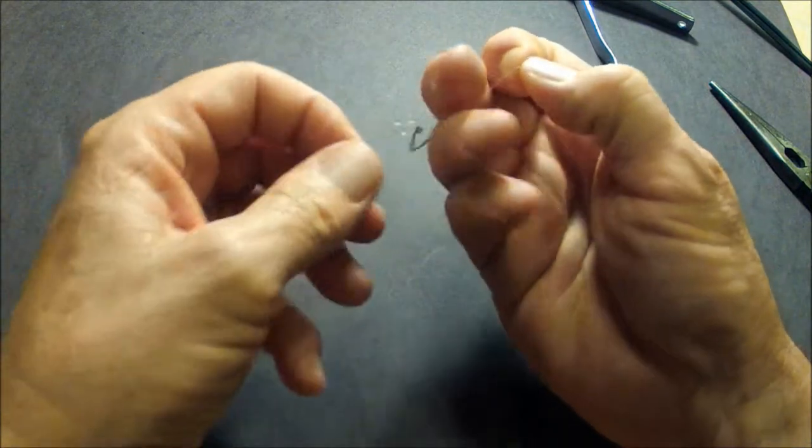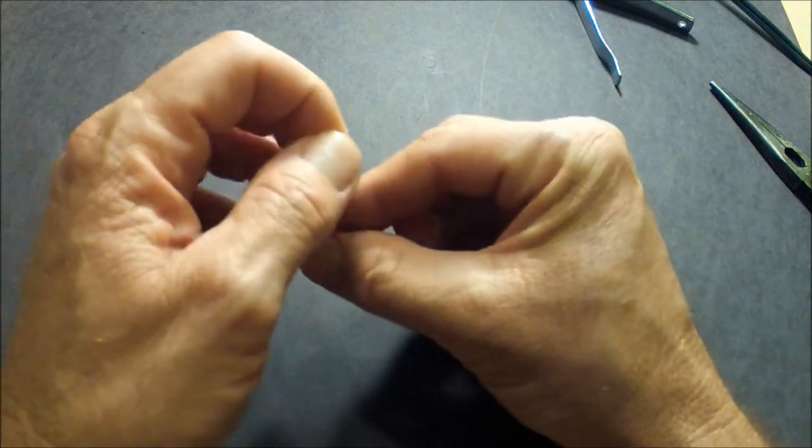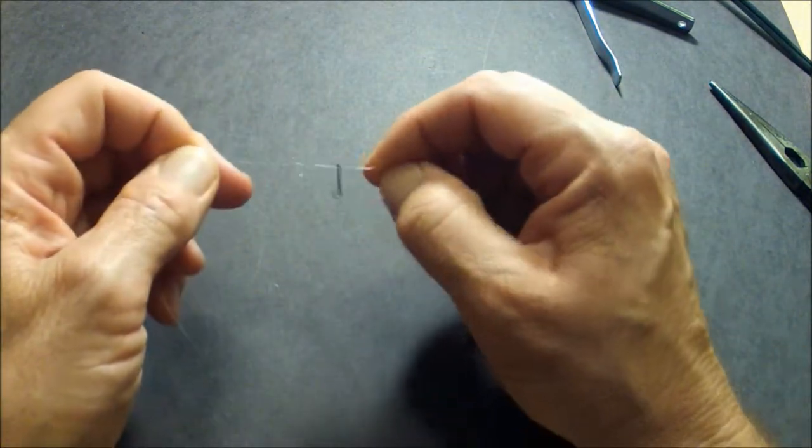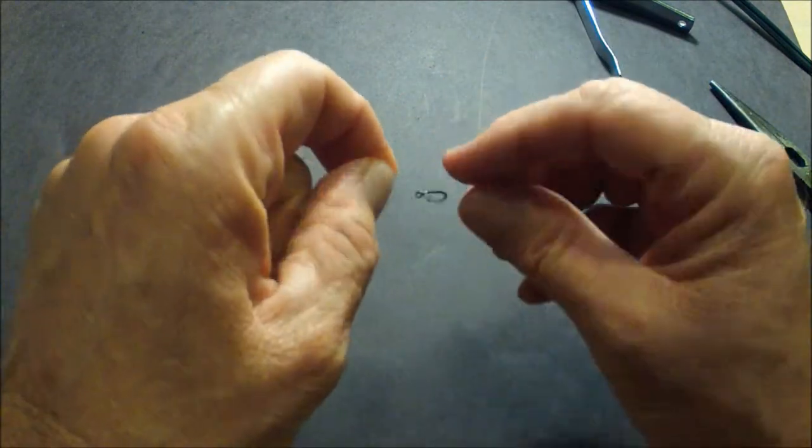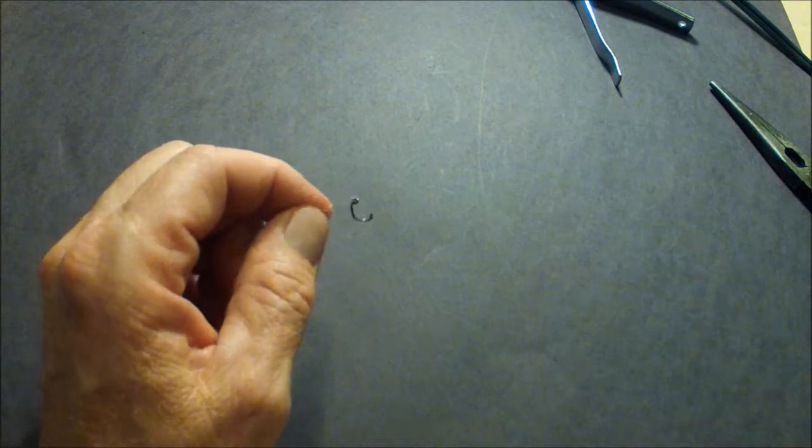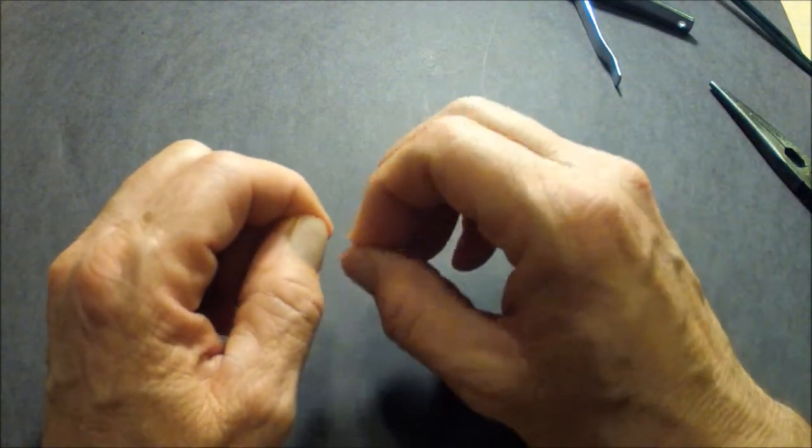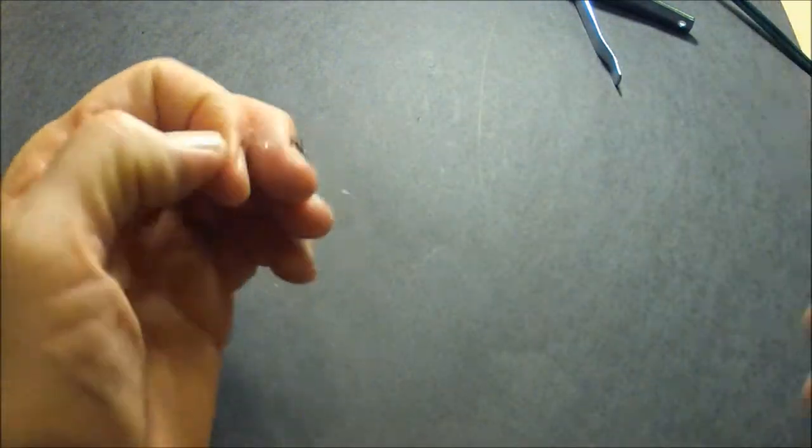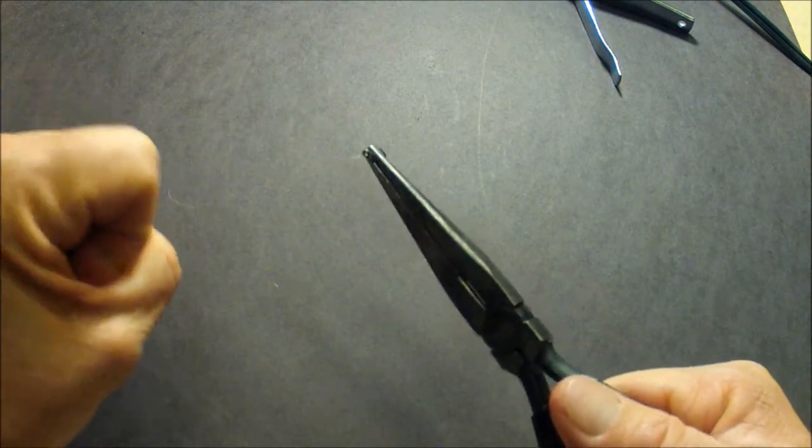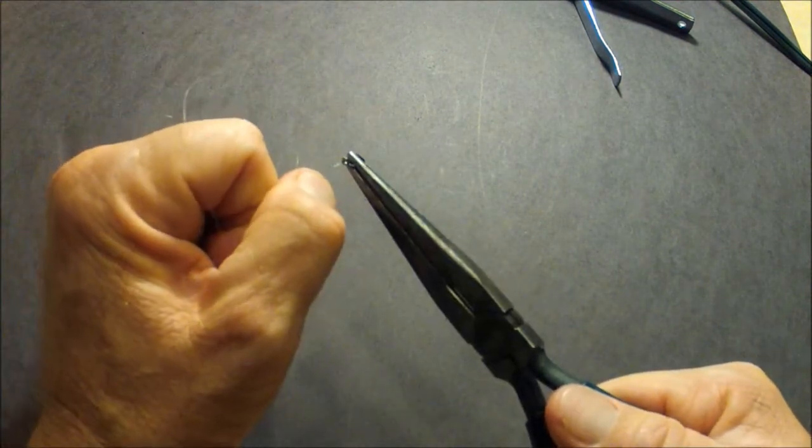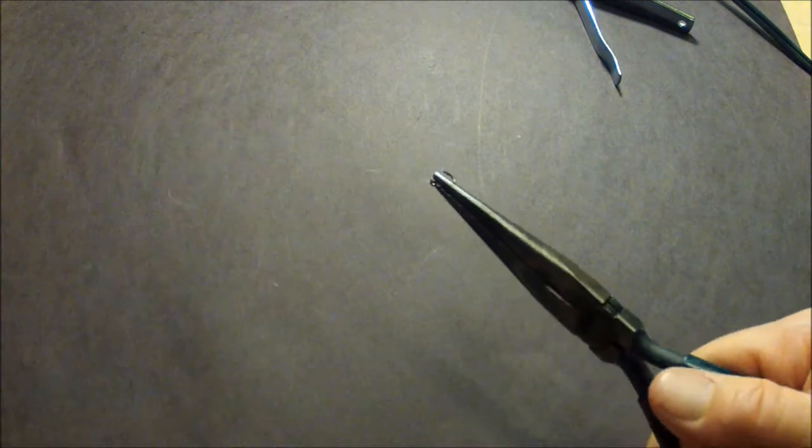Now same idea as before. Before I cinch this down I want to moisten the knot so that it'll cinch up real nice and tight. A little bit of spit on the end of my finger. I'm going to rub that into the knot area there. I'm going to grab the shank of the hook and pull it tight. You see how it slides all the way down nice and tight to the eyelet of the hook.